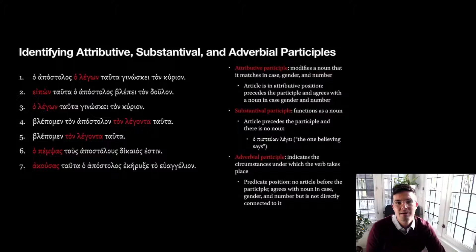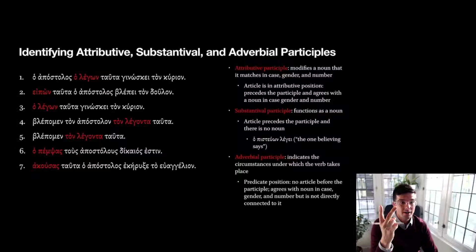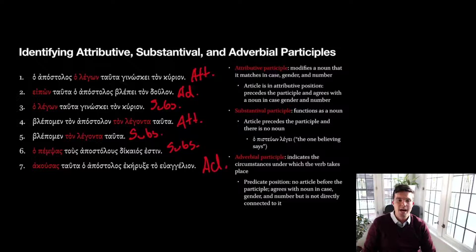So we're going to do another pause here, another quick quiz where I ask you to practice identifying whether a participle is attributive, substantival, or adverbial based on that review we just did — and based on what each one is going to look like specifically with respect to an article and another noun in the sentence. Go ahead and pause the lecture. Just write one to seven and then write if it's attributive, substantival, or adverbial.